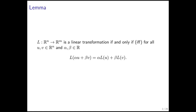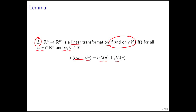This particular lemma says there is an alternative way of defining a linear transformation. It says that L is a linear transformation if and only if, no matter what vectors u and v you pick out of Rn and no matter what scalars you pick, if you take the linear combination of the vectors using those scalars and then transform the result, you get exactly the same result as if you first transformed the vectors and then took the linear combination of those result vectors.